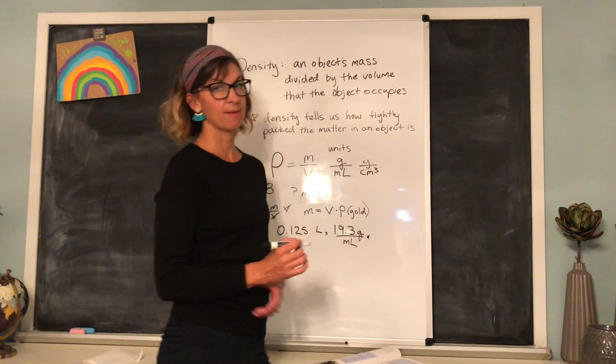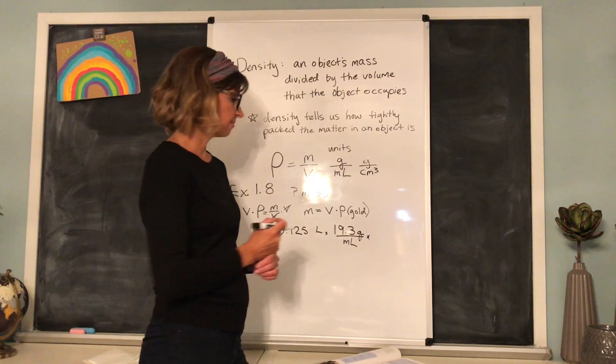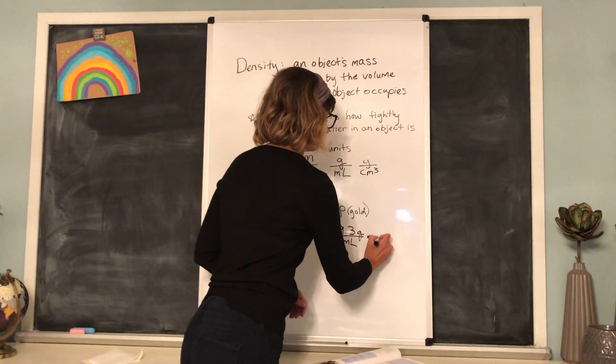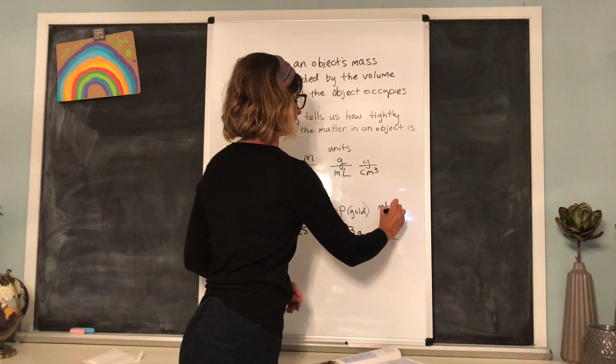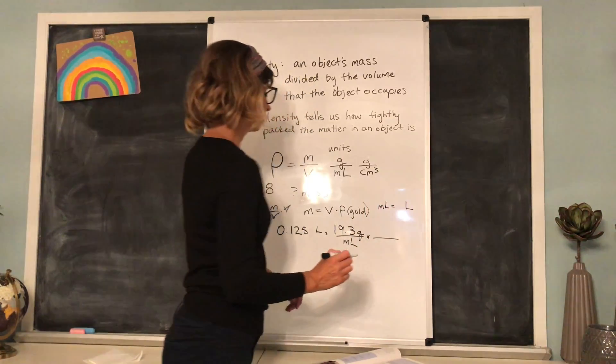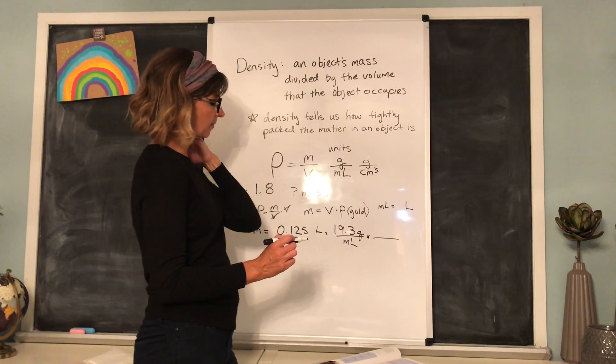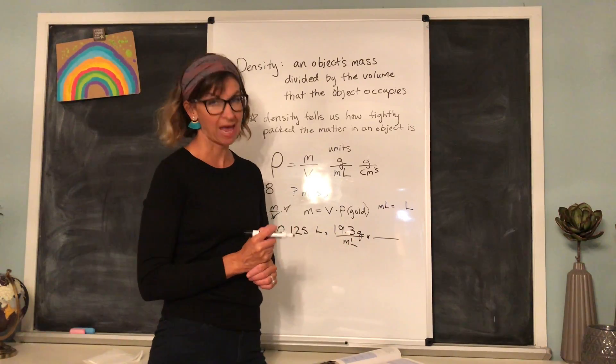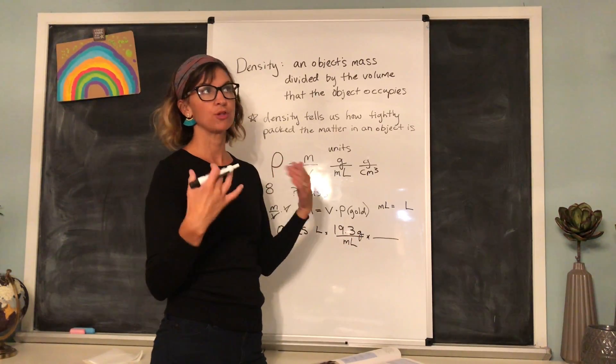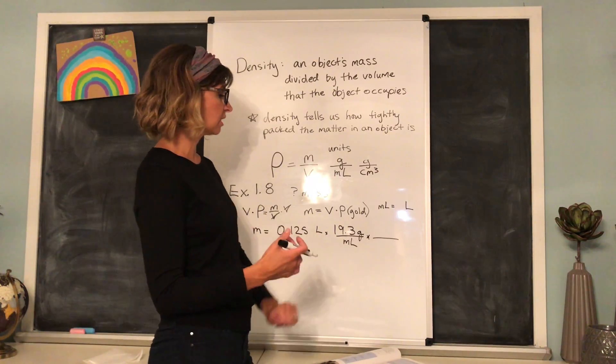So we have to multiply by using the factor label method, which we learned about last time. And we're going to multiply by the relationship between milliliters and liters so that we can cancel out these units because our answer is just going to end up being grams because we're looking for the mass of something. We measure mass with grams or kilograms.